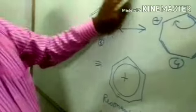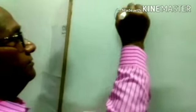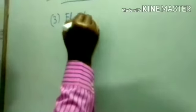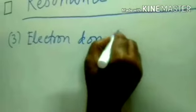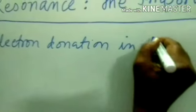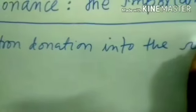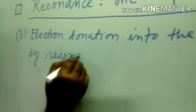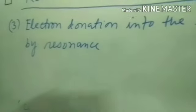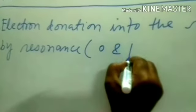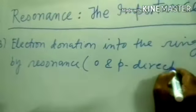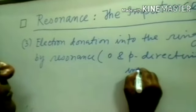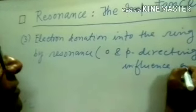Third importance of resonance: directive influence of the substituent — or in another way, electron donation into the ring by substituents by resonance. In other words, we call it the ortho and para directing influence of substituents.